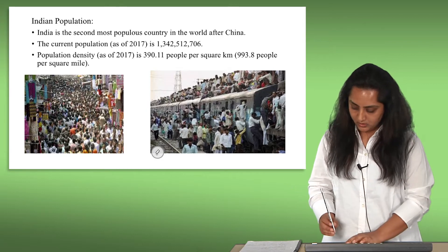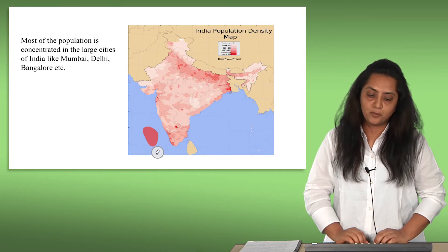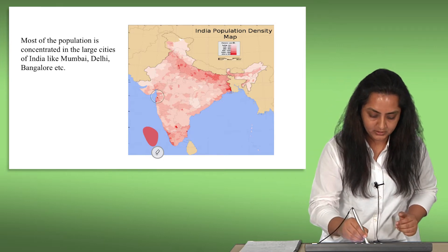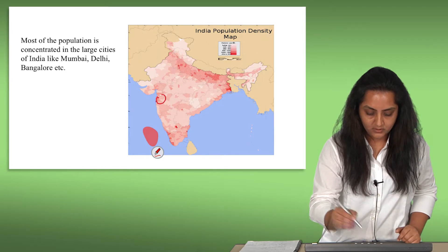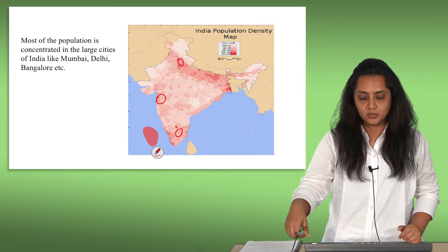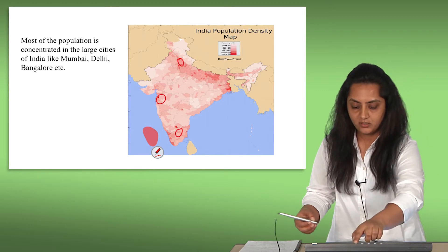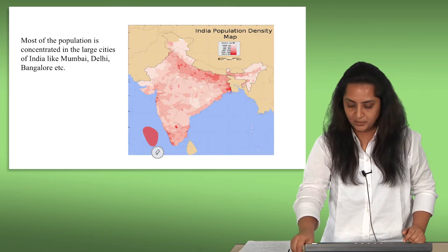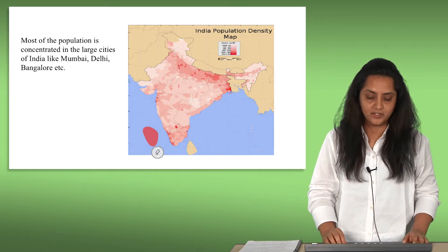Here is India's population density map. Most of the population is concentrated in large cities like Mumbai, Delhi, and Bangalore. Apart from these three cities, there are other cities like Chennai which are also very population-dense. The major reason, as mentioned, is that people tend to migrate from rural to urban areas for a better living and a better lifestyle.